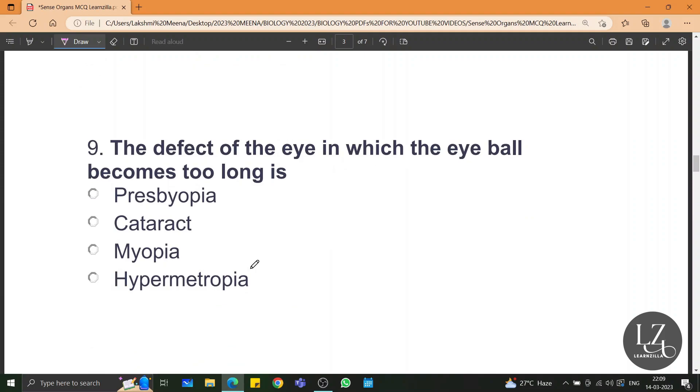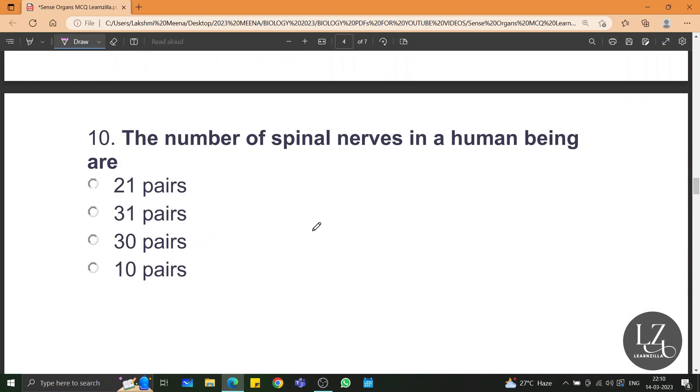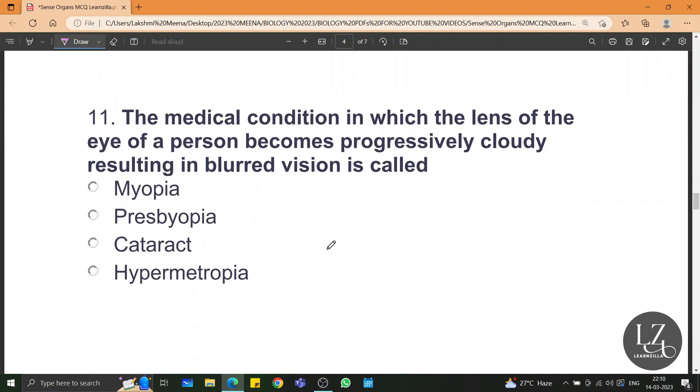The defect of the eye in which the eyeball becomes too long is called myopia. In myopia, the eyeball becomes too long, elongation. The number of spinal nerves in a human being are 31 pairs. The medical condition in which the lens of the eye becomes progressively cloudy resulting in blurred vision is called cataract.